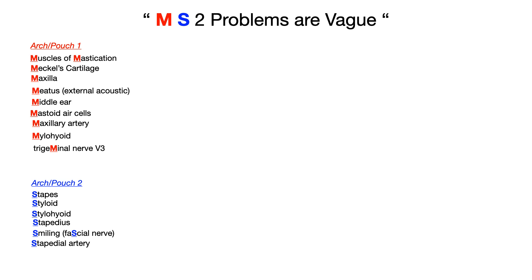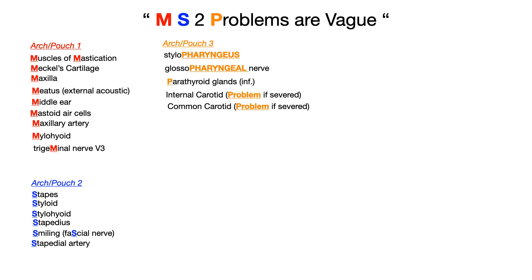We skip the 2 — it's just there to help the mnemonic make sense. We go to the P in problems. Everything with P or pharyngeus in the name comes from arch and pouch number three: the stylopharyngeus, the glossopharyngeal nerve, the parathyroid glands — specifically the inferior ones. The two arteries are the internal carotid artery and the common carotid artery. It's a major problem if those arteries are severed, and anatomically the carotids run through that same region.